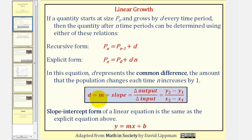The common difference d, which is the same as the slope, would be equal to the change in the function output divided by the change in the function input. Or if we were given two points, we can find the slope by determining the change in y divided by the change in x.